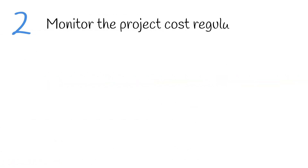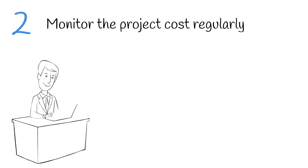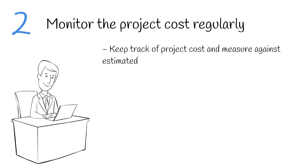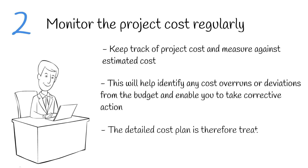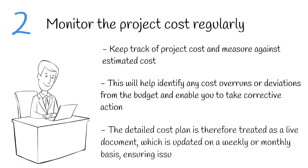The second tip is to monitor the project cost regularly. This ties in closely with tip 1. It's important to keep track of project costs and compare them with the estimated cost regularly. This will help identify any cost overruns or deviations from the budget and enable you to take corrective action. The detailed cost plan is therefore treated as a live document, which is updated on a weekly or monthly basis, ensuring issues are promptly addressed.